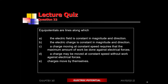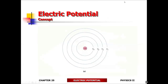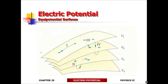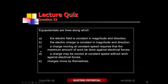Let's focus on answer A: electric field is constant in magnitude and direction along the equipotential. The electric field is constant. But notice that the electric field doesn't have a component along the direction of the equipotential — the electric field is 90 degrees to the equipotential. Hence the reason why A did not work out. That was a good try and hopefully a good learning experience.